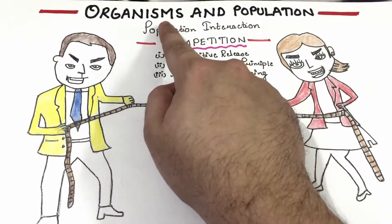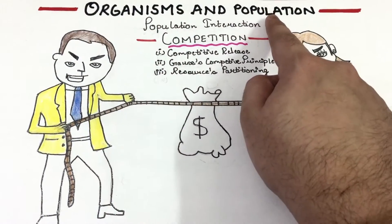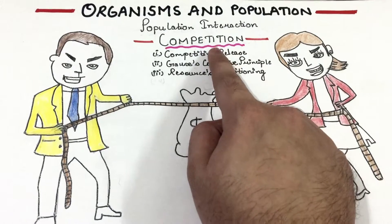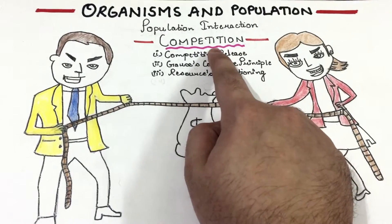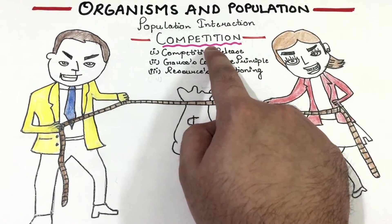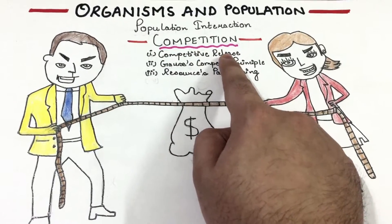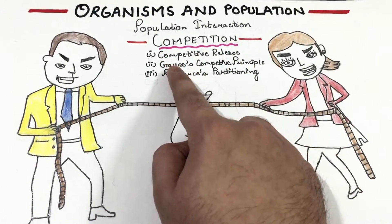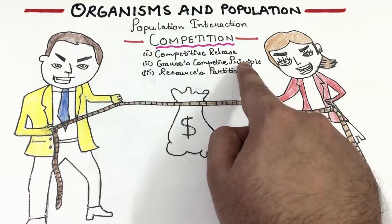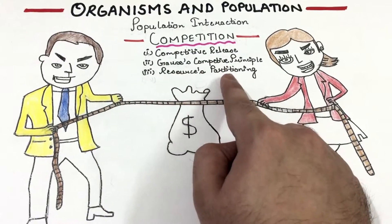Hello students, this is the seventh video of Organism and Population. The topic of today is competition, in which we will study what is competitive release, what is Gauss's competitive exclusion principle, and what is resource partitioning.